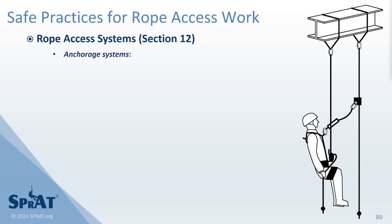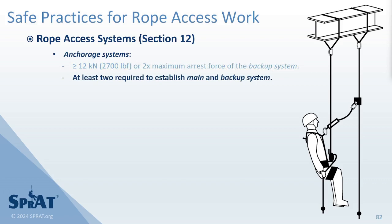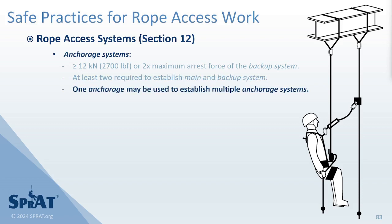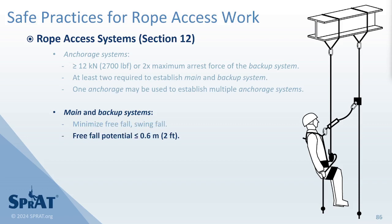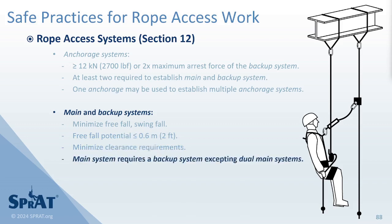Anchorage systems used within rope access systems must be at least the greater of 12 kilonewtons (2700 pound-force), or two times the maximum arrest force of the backup system. Forces associated with directional anchorage systems may require higher anchorage system strengths. At least two anchorage systems are required to establish a main and backup system. One anchorage may be used to establish multiple anchorage systems. Main and backup systems must be used in a manner that minimizes both potential freefall and swingfall. Freefall potential should not exceed 0.6 meters (2 feet) to minimize clearance requirements. Any main system requires an associated backup system, with the exception of dual main systems.